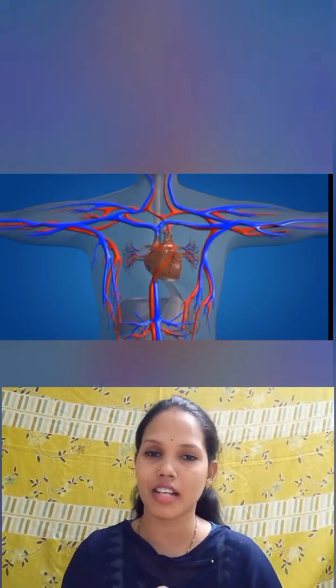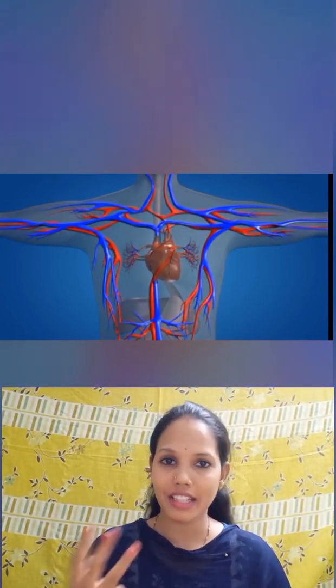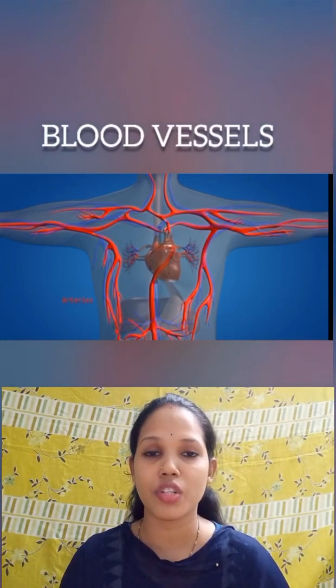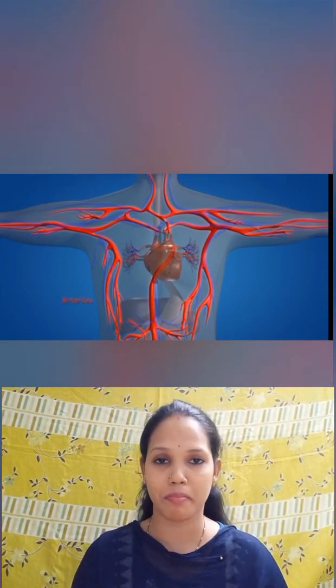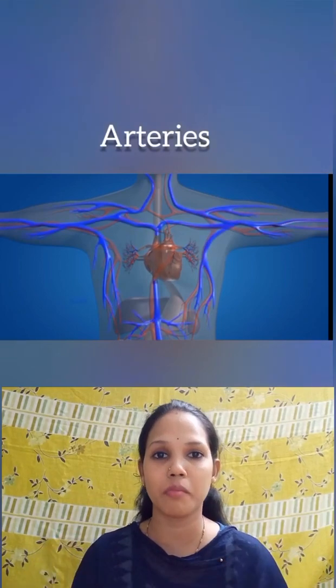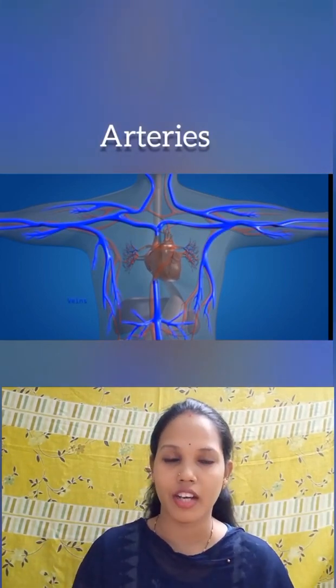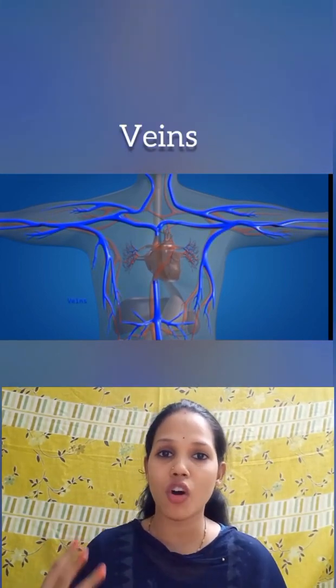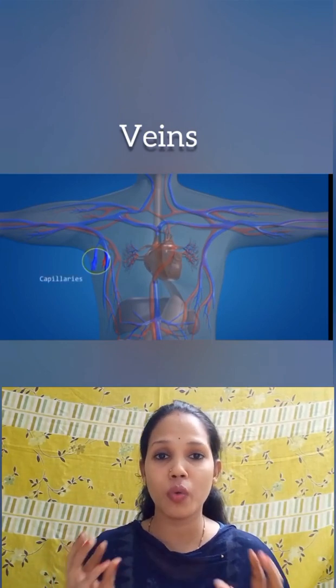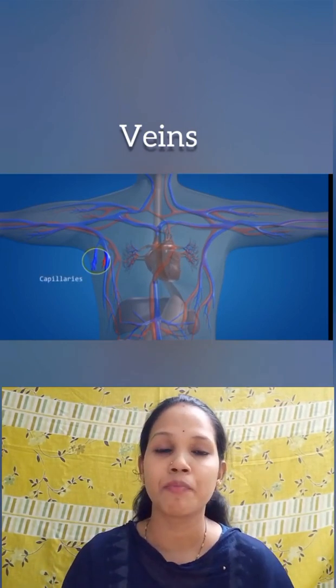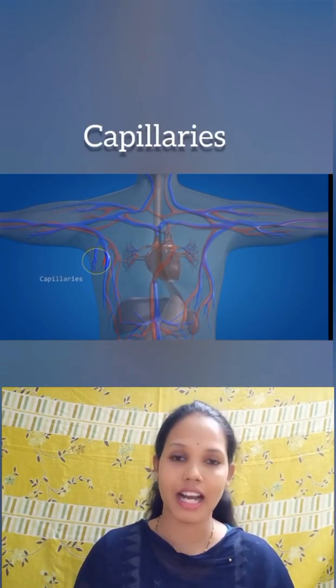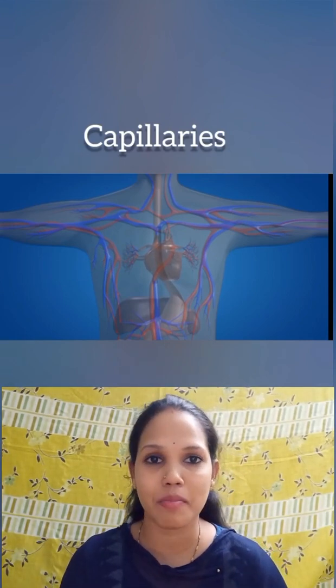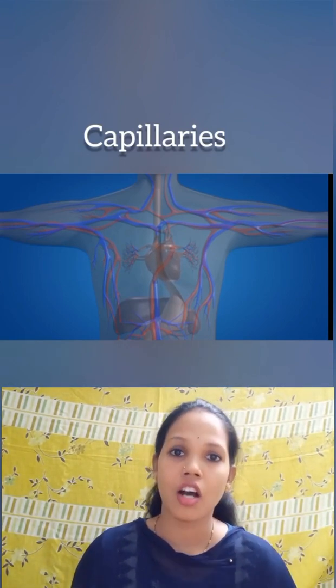Generally there are three important types of blood vessels in our body. The red ones are the arteries, which carry oxygenated blood from the heart to all parts of the body. The veins carry deoxygenated blood towards the heart. And the third type are the capillaries, which are the smallest blood vessels in our body. All three blood vessels ensure that circulation happens all the time.